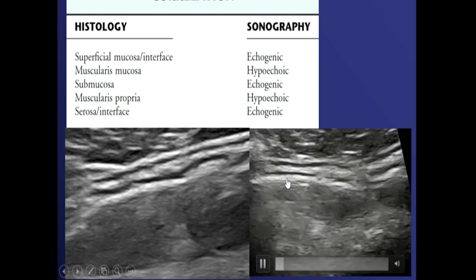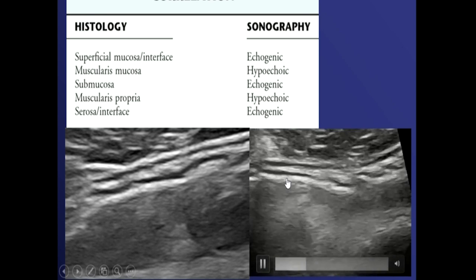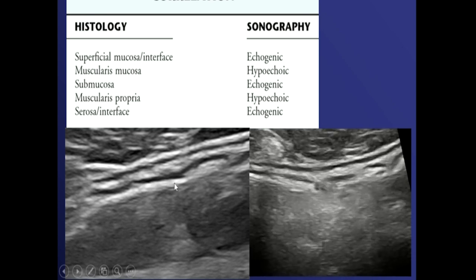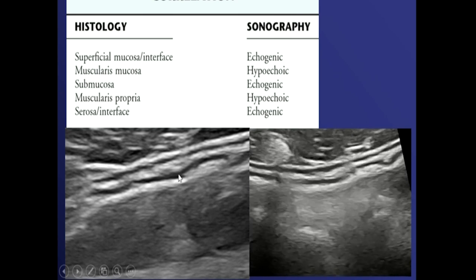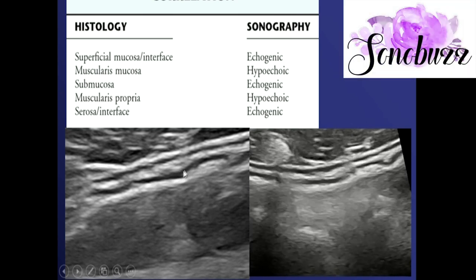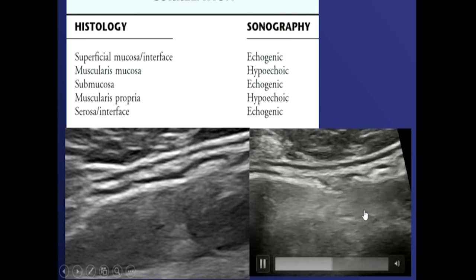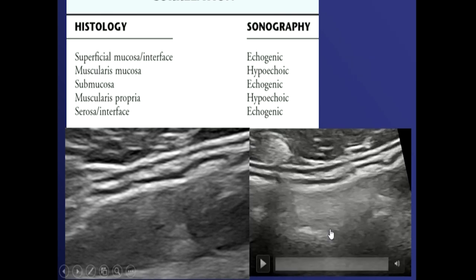The typical gut signature: there are five bowel layers. The superficial mucosa interface is echogenic, then muscularis mucosa which is hypoechoic, then submucosa, then muscularis propria, and finally the serosal interface which is again an echogenic line. This is the typical bowel signature — this shows fluid within the stomach giving better contrast.